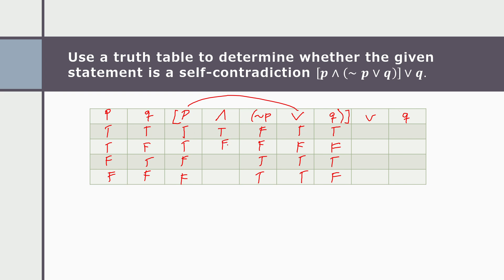This is false, this is false, and this is false. Then: true, false, true, false. And after that, we need to copy Q here: true, false, true, false.